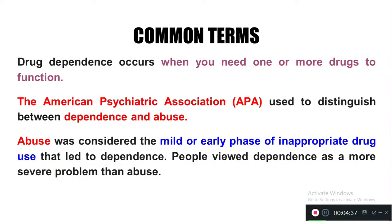Now let us see the common terms: drug dependence and drug abuse. Drug dependence occurs when you need one or more drugs to function — for example, a person cannot do any day-to-day activities without taking a drug. The American Psychiatric Association distinguished between dependence and abuse: abuse was considered the mild or early phase of inappropriate drug use.